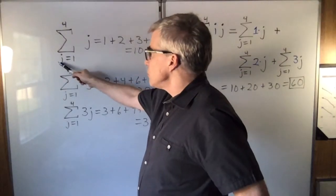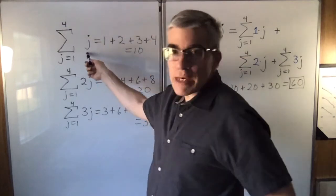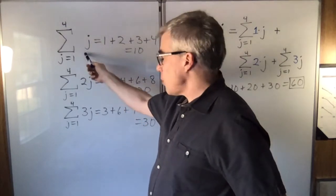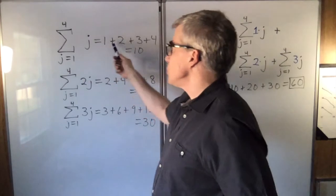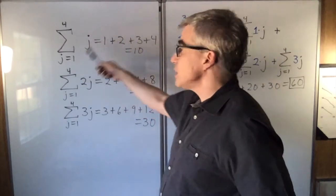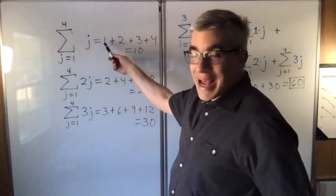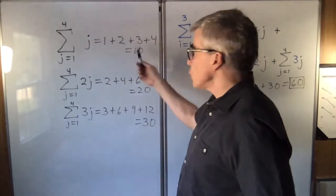Suppose you have a sum from j equals 1 to 4 of j. That means when j equals 1, j is 1. When j is 2, j is 2. When j is 3, it's 3. When j is 4, it's 4. And you add them up, 1 plus 2 plus 3 plus 4, to get 10.